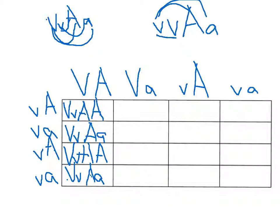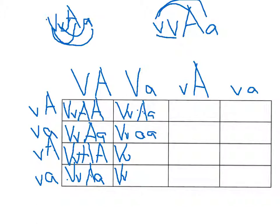Continuing through the Punnett square, we get all combinations of big V and little v paired with big A, little a, and little a little a. The offspring genotypes include big V little v big A big A, big V little v big A little a, little v little v big A big A, little v little v big A little a, and little v little v little a little a among others.